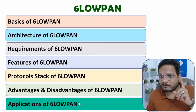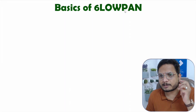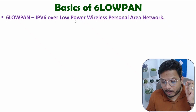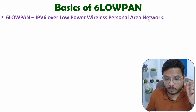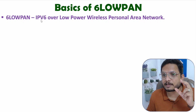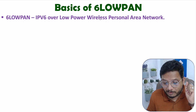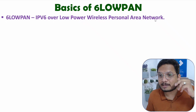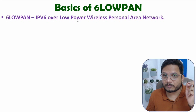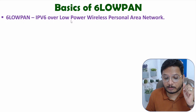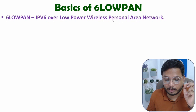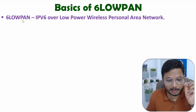Let us start with the basics of 6LoWPAN. 6LoWPAN is IPv6 over Low-Power Wireless Personal Area Network. A low-power wireless personal area network communicates using IPv6 internet protocol, and this network is established using IoT devices that function at low power with wireless communication.